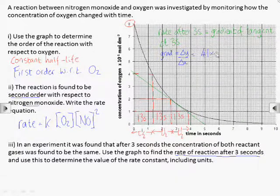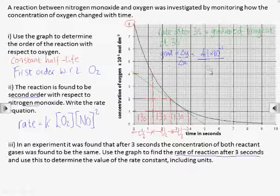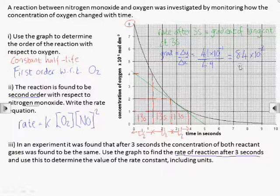Note that the concentration axis may have a scaling factor included with the units, as it does here. So that has to be included in any y values. Here we find the gradient is 8.4 times 10 to the minus 2 moles per dm cubed per second.